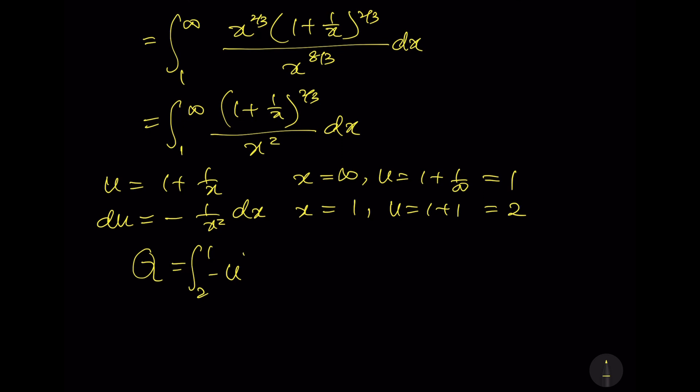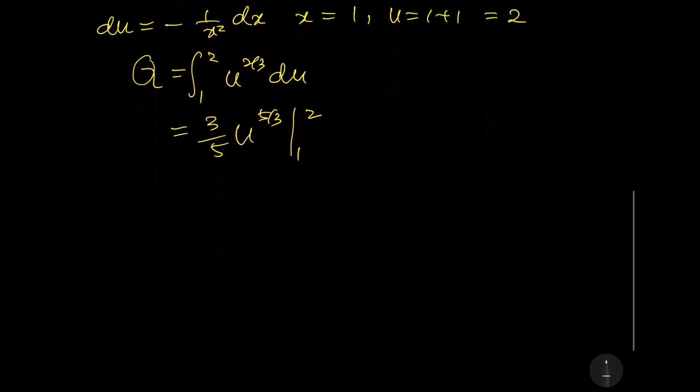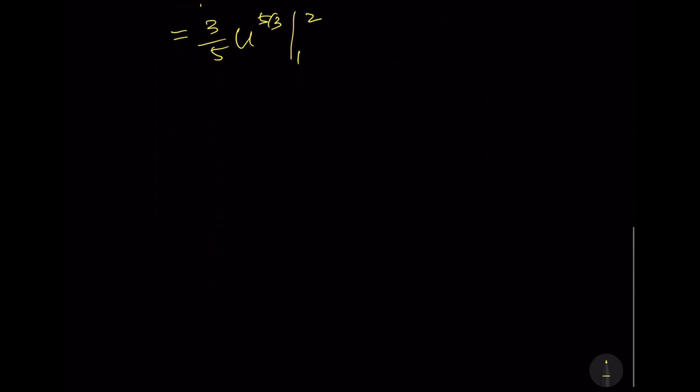We can cancel the negative by swapping the integration bound. This is equal to 3 over 5 u power 5 over 3, and then putting u equals to 2 and u equals to 1.